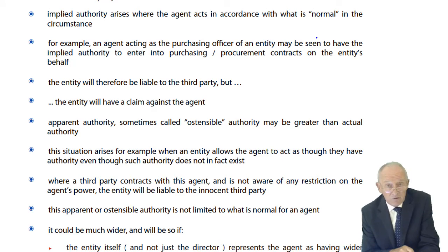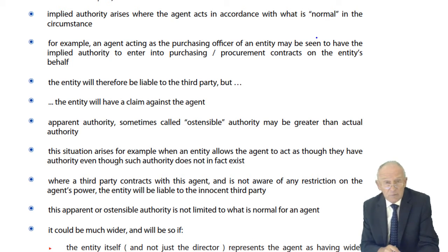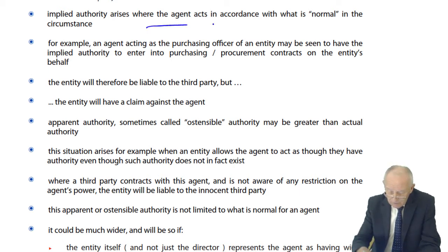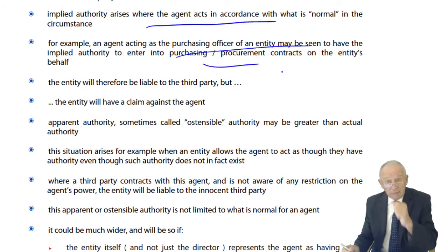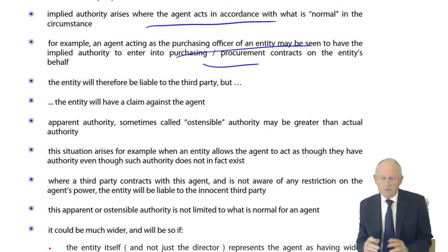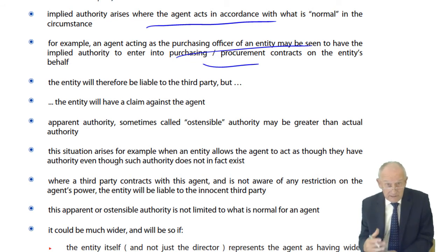Of course, the owner then has a claim against the bar manager, but pursuing that is expensive and the bar manager may not be able to pay. So implied authority means an agent acting as a purchasing officer of an entity may be seen to have the implied authority to enter into purchasing contracts. The company will be liable to a third party, but will have a claim against the agent because the agent exceeded their authority — though you're unlikely to pursue it. You do have the legal right to take the agent to court and seek compensation.